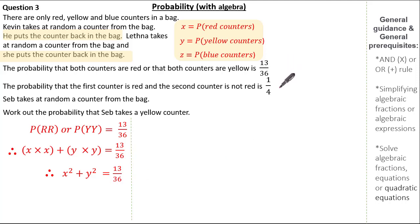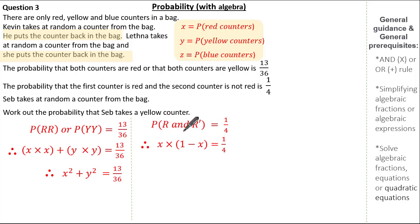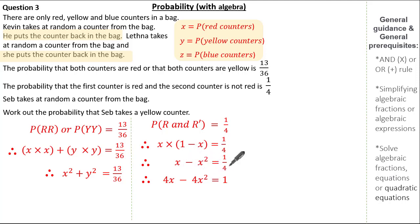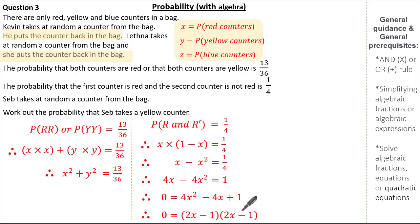Using the second part of the question to form another equation: the probability of red AND not red is 1 quarter. The probability of red is x, and not red is 1 minus x. So x times (1 minus x) equals 1 quarter. Expanding gives x minus x squared equals 1 quarter. Multiplying by 4: 4x minus 4x squared equals 1. Rearranging to make the quadratic equal to zero: 4x squared minus 4x plus 1 equals 0.